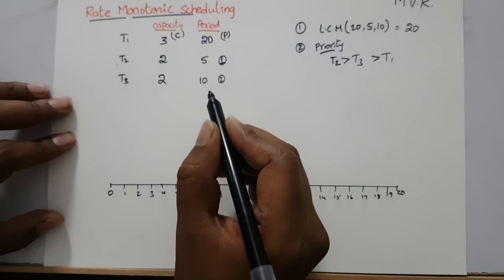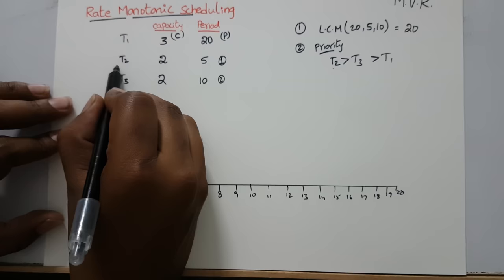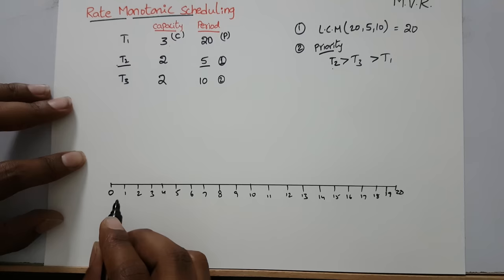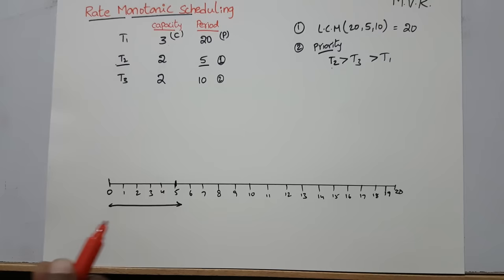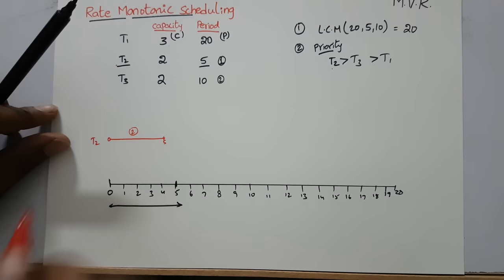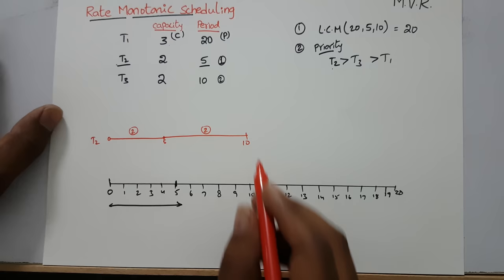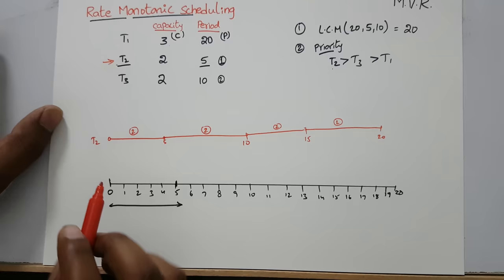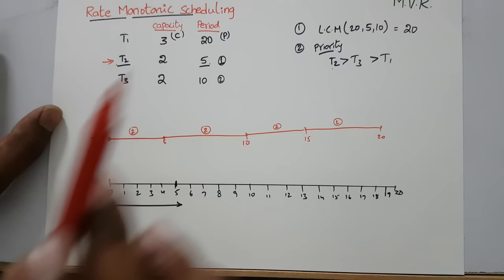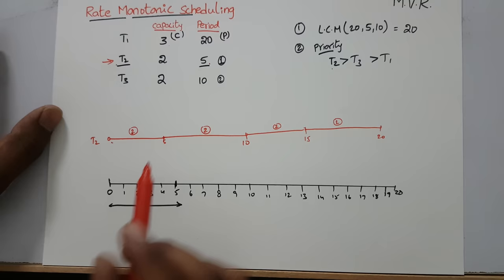Now for the scheduling: T2 has highest priority. T2 has a period of 5, meaning for every 5 time units, T2 must execute 2 units. So from 0 to 5 it executes 2 units, from 5 to 10 it executes 2 units, from 10 to 15 it executes 2 units, and from 15 to 20 it executes 2 units. That is the meaning of T2 having capacity 2 and period 5.